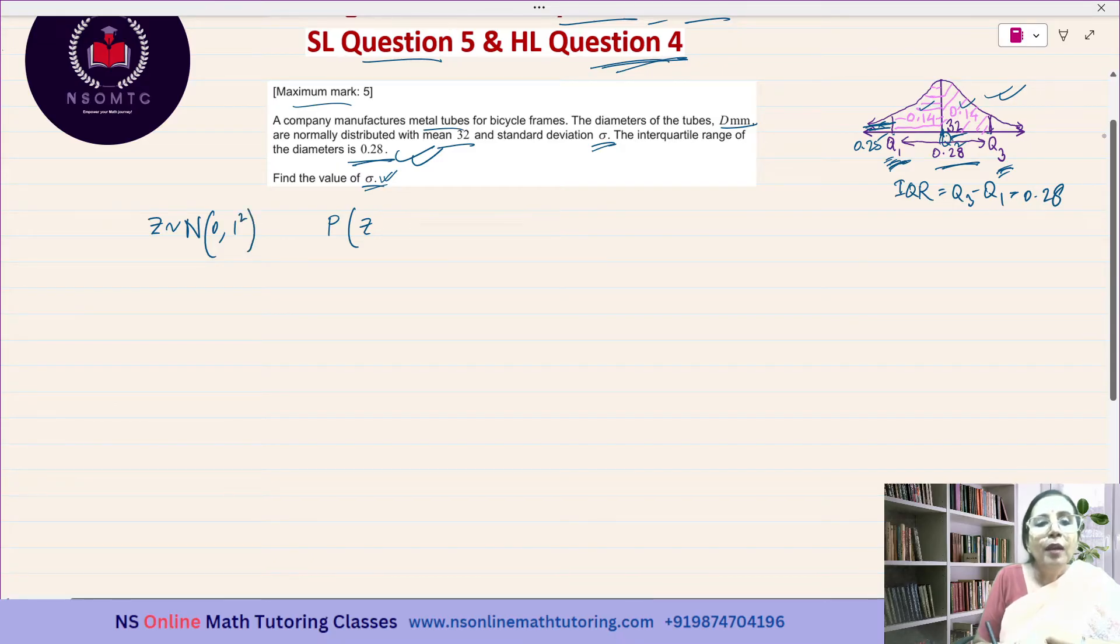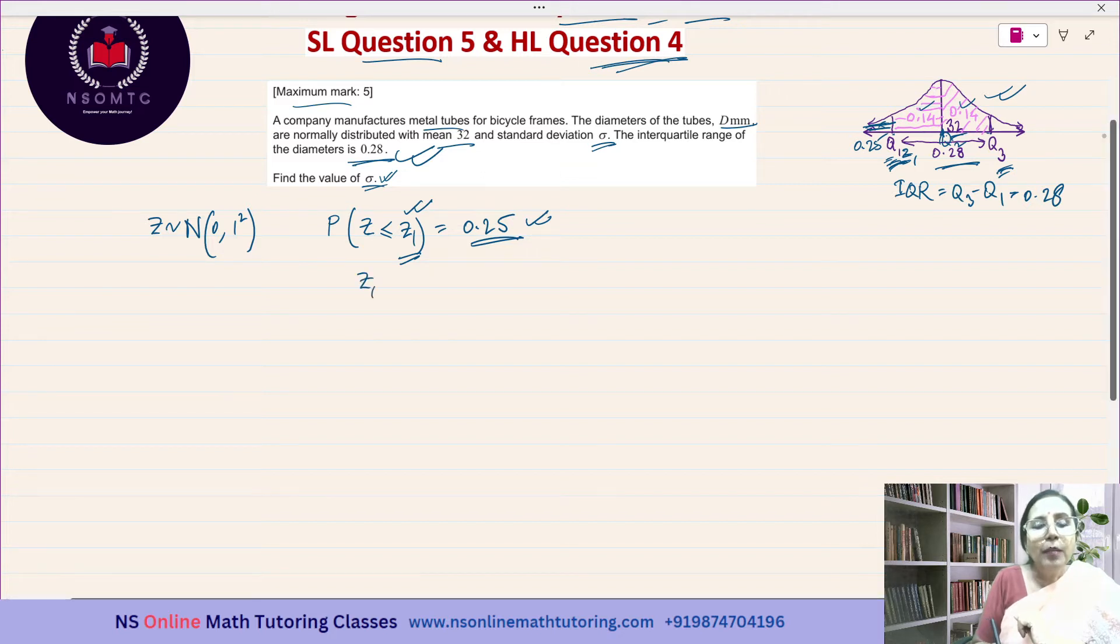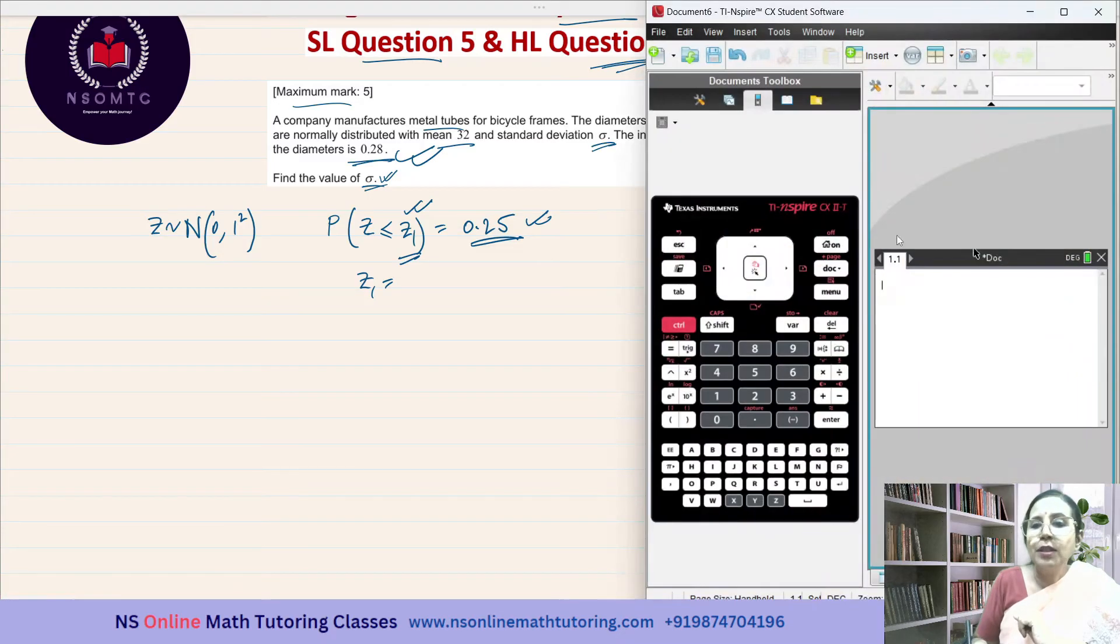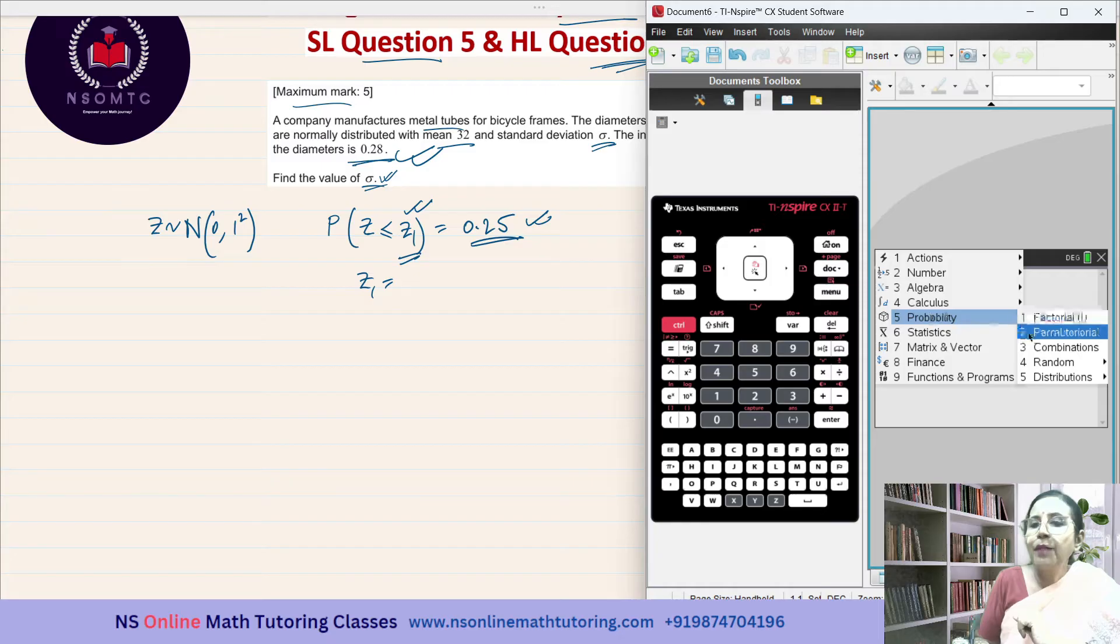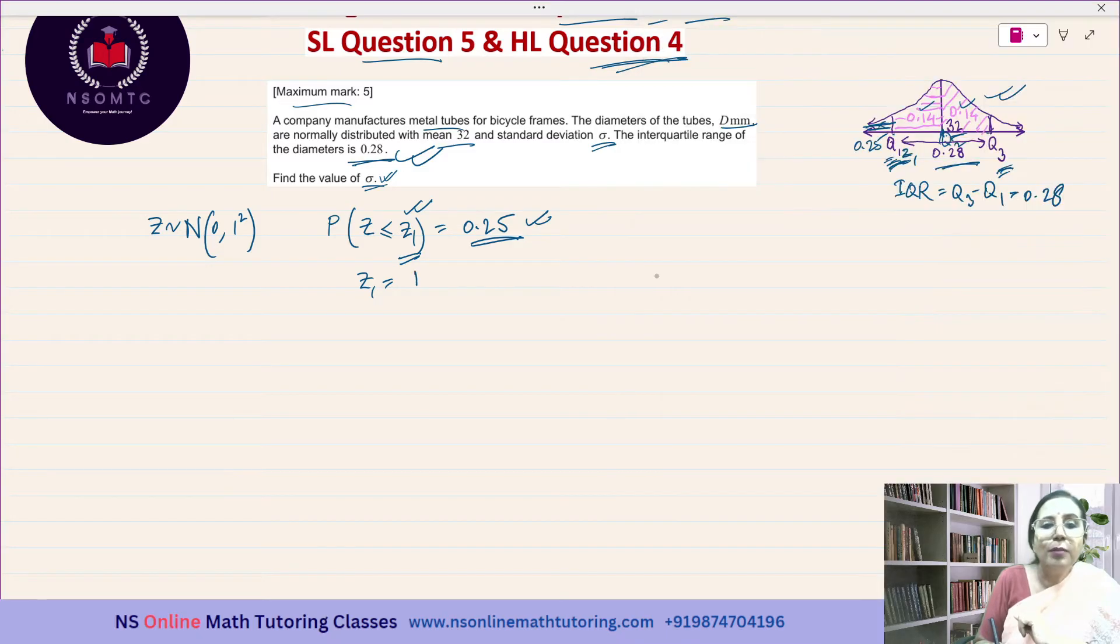I can get the value of z1 because the probability is given. I can use the inverse normal function to find the value of z1. z1 will be equal to inverse normal. I have to use the calculator: menu, probability, distribution, inverse normal.